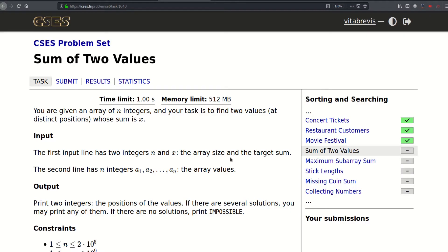Hello! So today we will be solving this problem. It's called sum of two values. We are given an array of n integers and our task is to find two values at distinct positions whose sum is x.